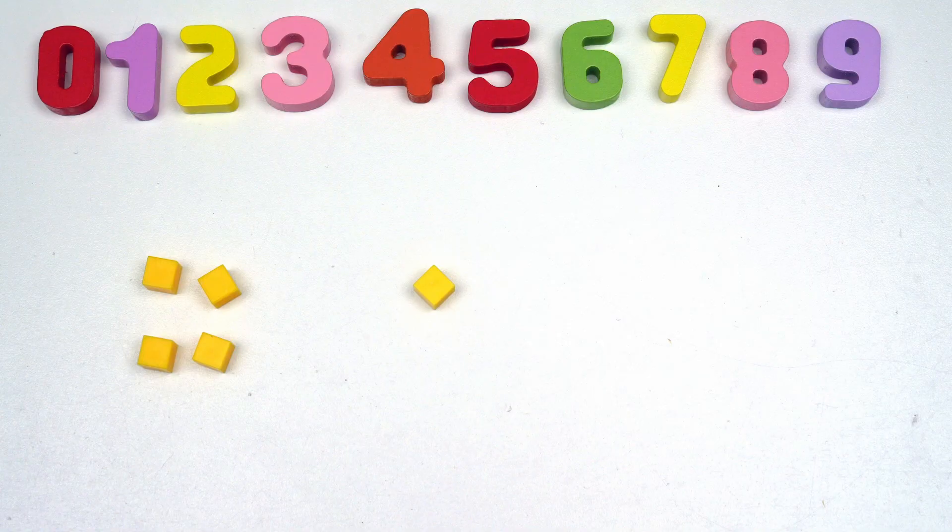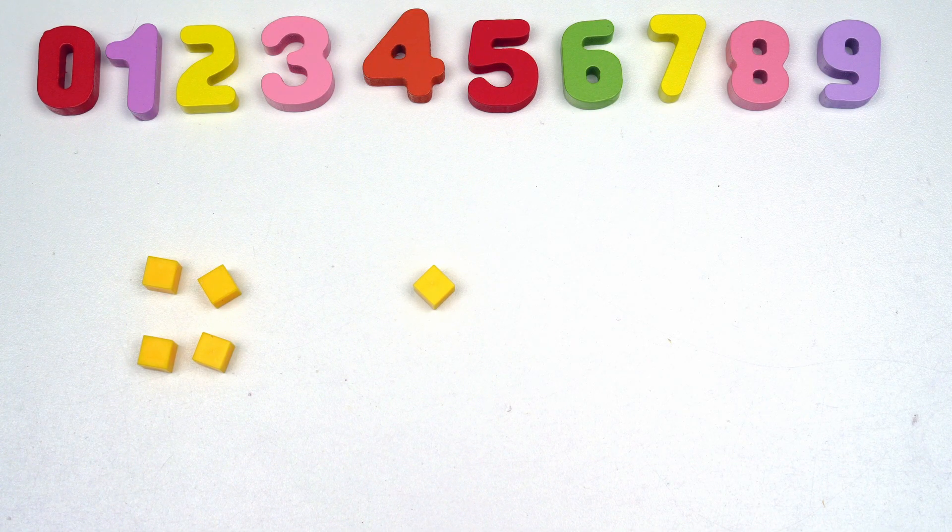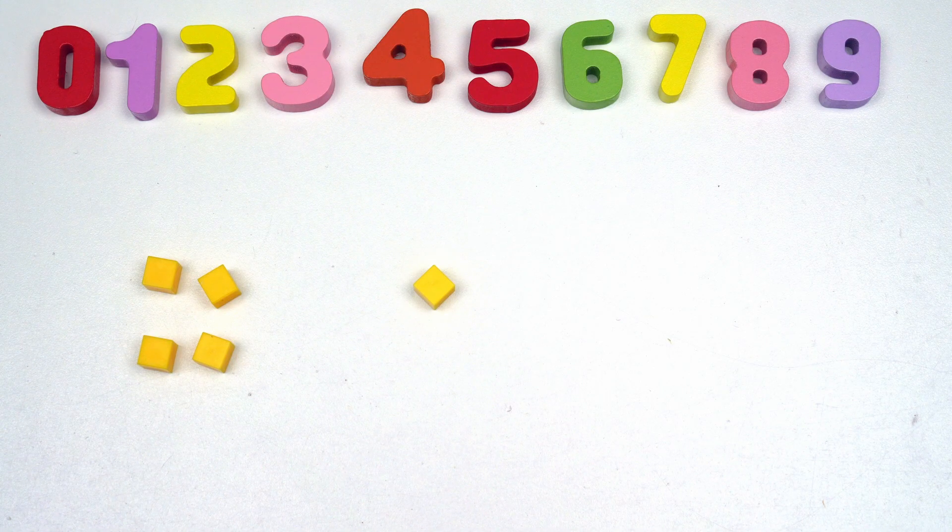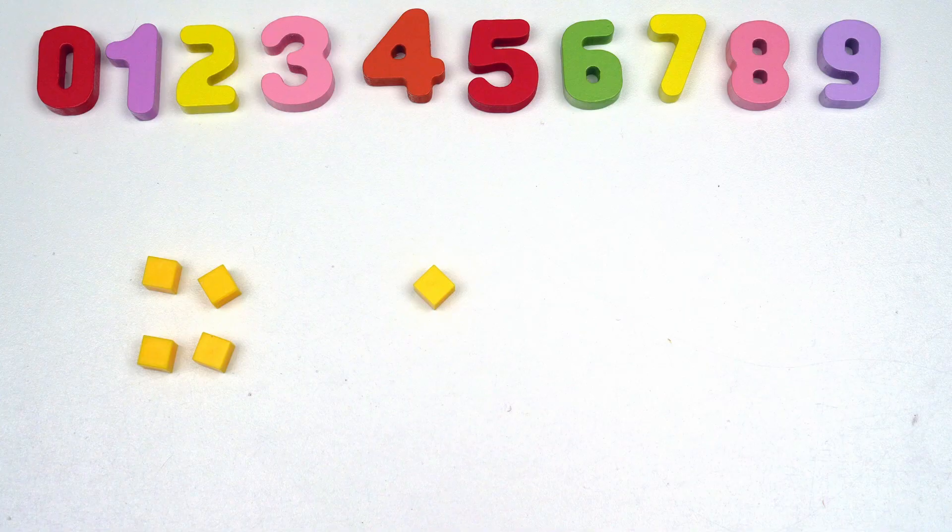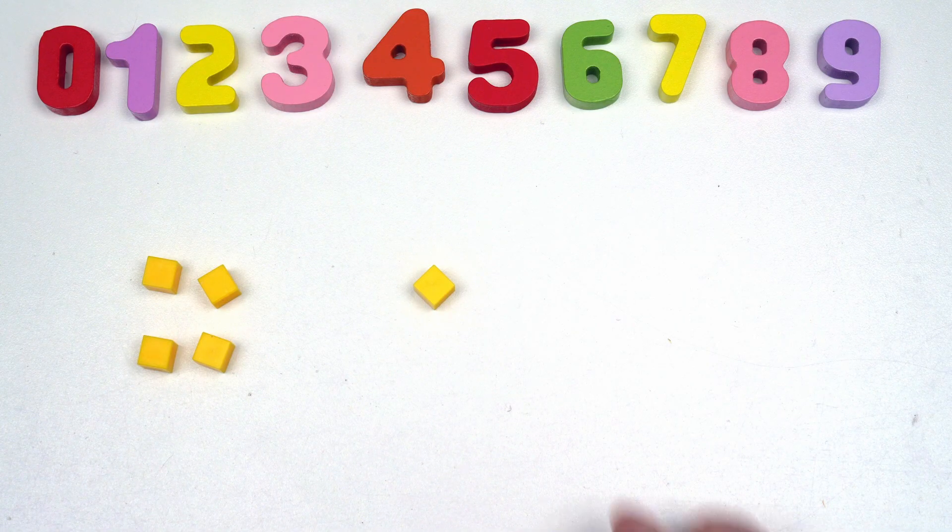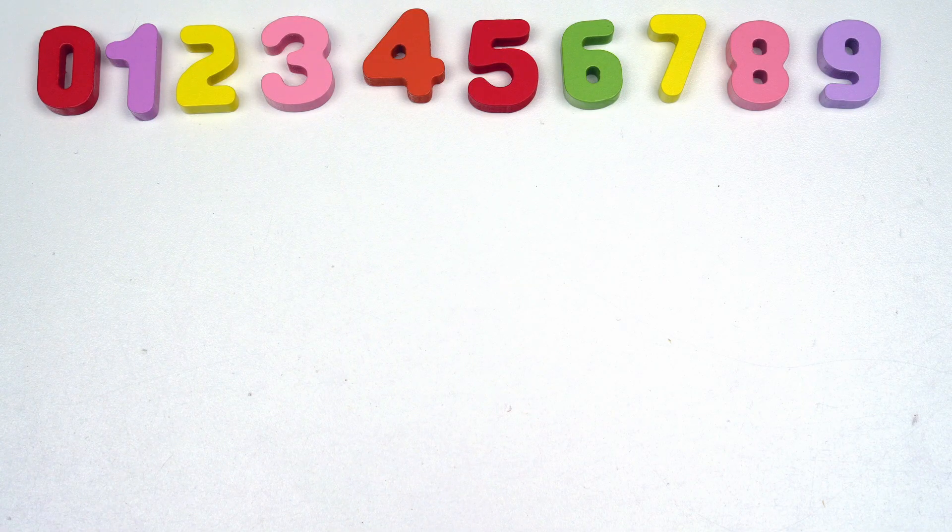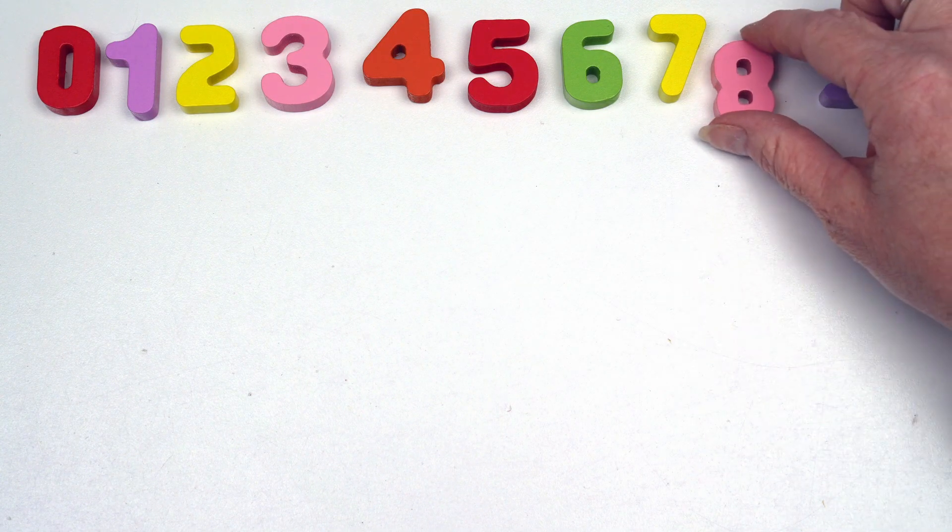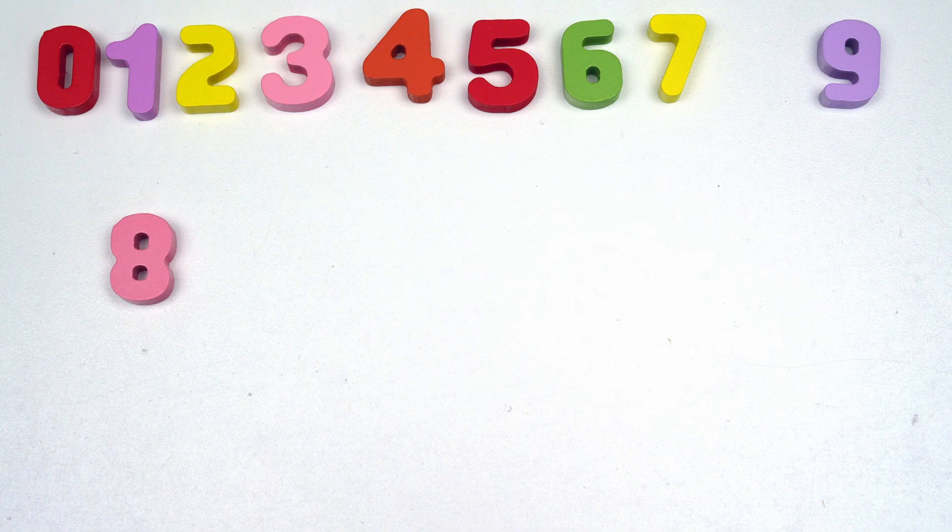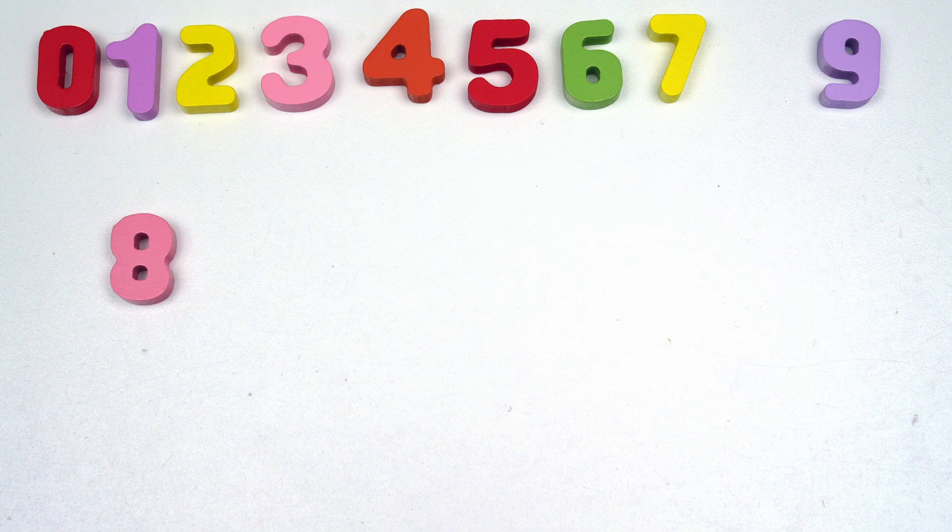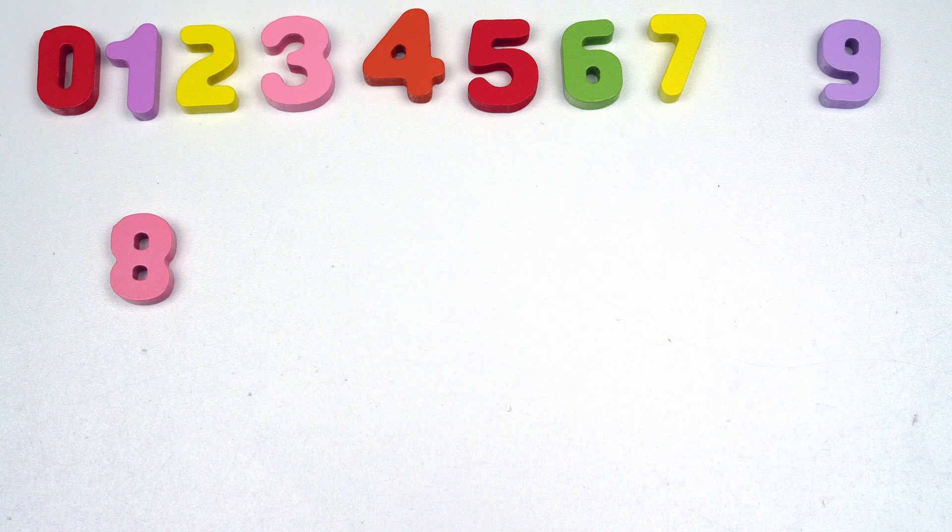Every number has its own set of number bonds. Learning them will help you see how numbers are connected and that will make math easier and more fun. Let's do some more examples. This time we'll do the number eight. What are two numbers that added together make the number eight? Let's get some blocks.